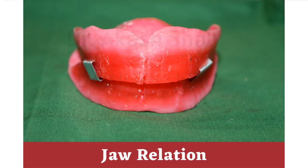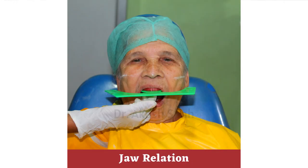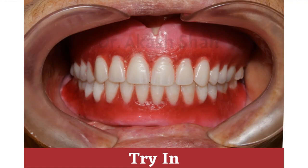The third step is known as jaw relation. In this, the height of upper and lower dentures, position of the patient's teeth, patient's smile line, and other recordings are made. On the basis of these recordings, a trial denture is made which is known as try-in.